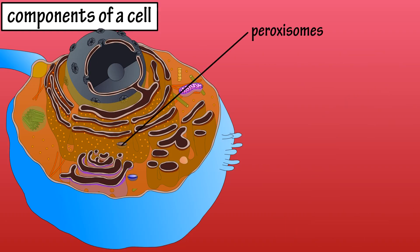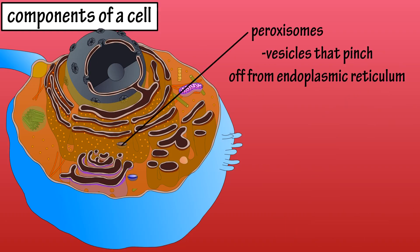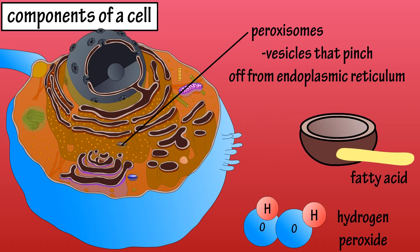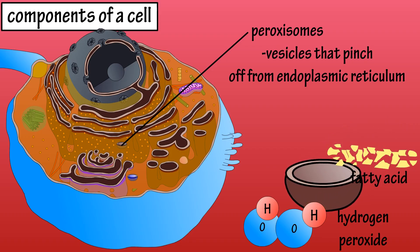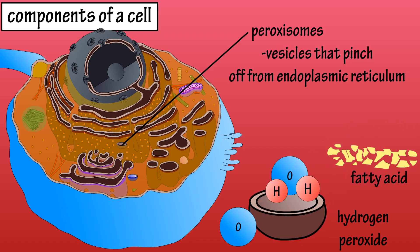Peroxisomes are membranous vesicles that are pinched off from the rough ER. They break down long-chain fatty acids and amino acids, and also contain the enzyme that decomposes the harmful hydrogen peroxide into water and oxygen inside the cell.